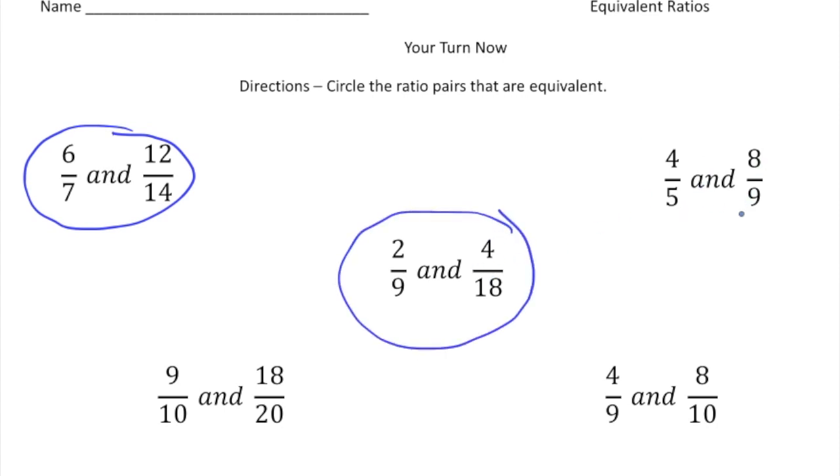Four fifths and eight ninths. Well, I know that four times nine is thirty-six and I know that eight times five is forty. And because thirty-six does not equal forty, I know those are not equivalent.